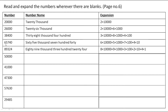Next comes 65,740. The name is sixty-five thousand seven hundred forty. The expansion is 6 × 10,000 + 5 × 1,000 + 7 × 100 + 4 × 10. Next comes 89,324. The name is eighty-nine thousand three hundred twenty-four. The expansion is 8 × 10,000 + 9 × 1,000 + 3 × 100 + 2 × 10 + 4 × 1.